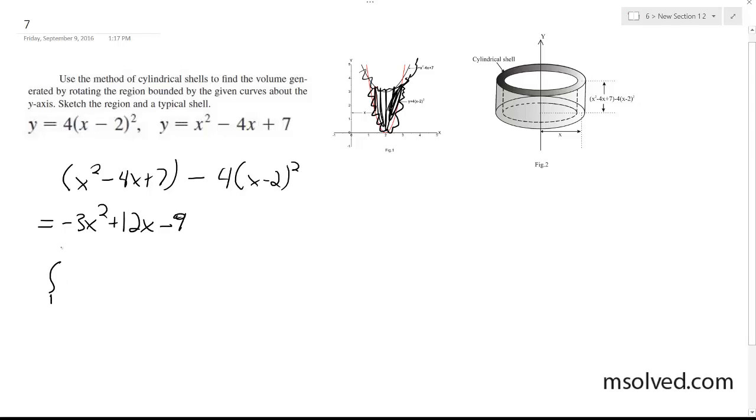Using shells, we're going from 1 to 3 for the volume. We take 2 pi x times negative 3x squared plus 12x minus 9 dx. Volume ends up being 2 pi from 1 to 3, so we get negative 3x cubed plus 12x squared minus 9x dx.